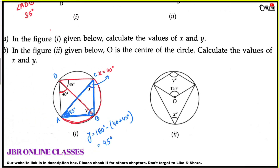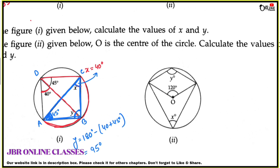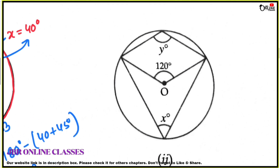Next problem: O is the center of the circle. Calculate the values of X and Y. The central angle is 120 degrees. The inscribed angle X subtended by that arc equals half of 120, so X equals 60 degrees.